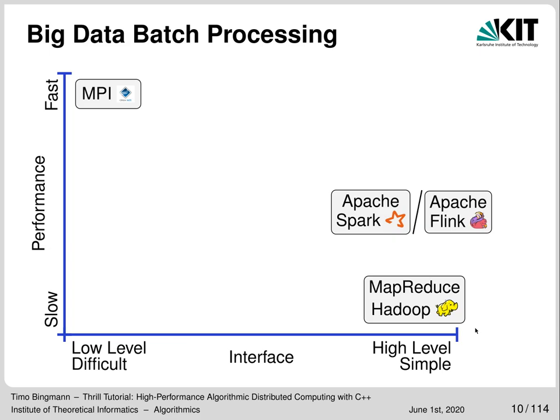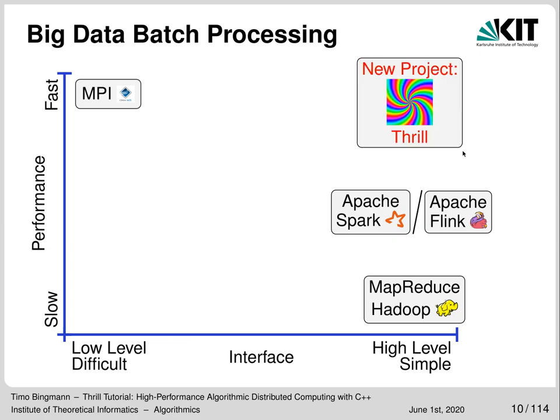When you see the world like this — MPI fast but hard, MapReduce easy but slow — what do you do? You try to fill the blank spot in the upper right corner. And this is our attempt with Thrill. The requirements list comes from previous experience implementing STXXL, a library of external memory algorithms, and from the suffix array construction use case.